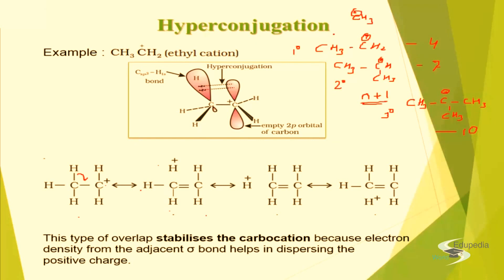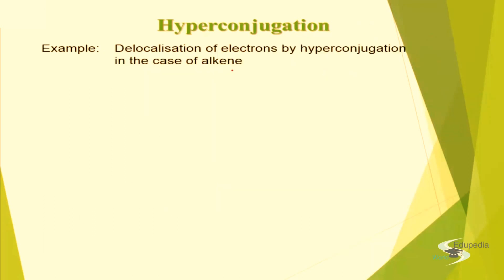Similarly, you can analyze stability with the help of the inductive effect. A primary carbocation has 1 methyl group giving less +I effect; a secondary has 2 giving more +I effect; a tertiary has 3 methyl groups giving even more +I effect. However, between inductive effect and hyperconjugation effect, the more dominating effect is the hyperconjugation effect, so we will analyze based on that more dominant effect.